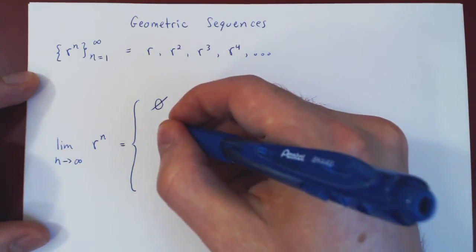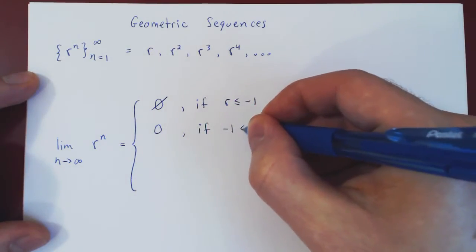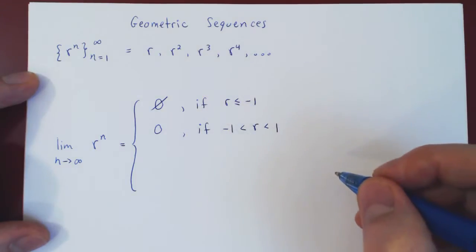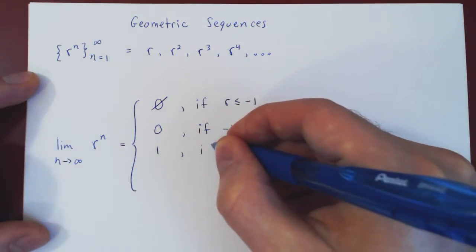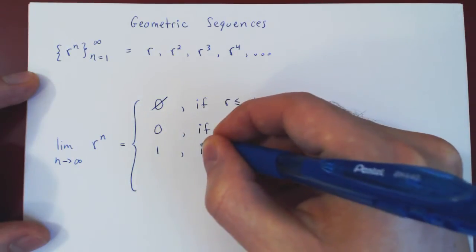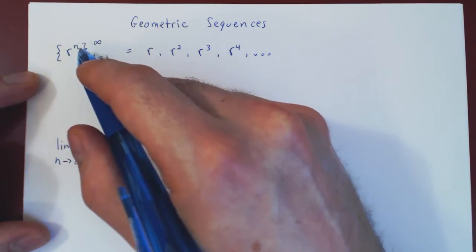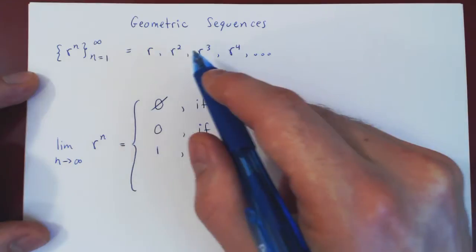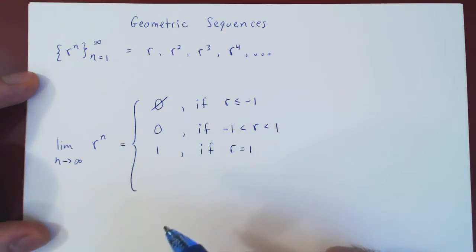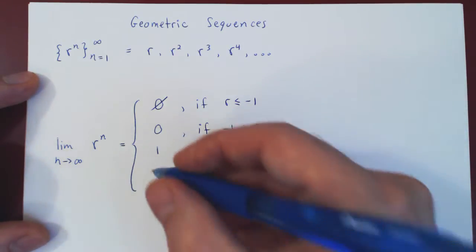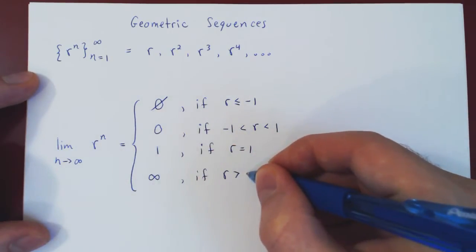The limit is equal to 0 if r is strictly between negative 1 and 1. If r is equal to 1, the limit is 1. And the limit does not exist, but specifically by blowing up, if r is strictly larger than 1.